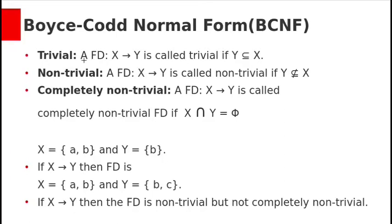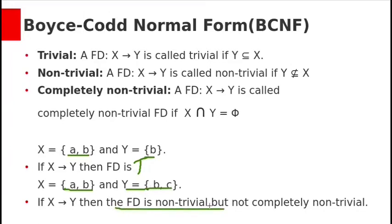What is a trivial functional dependency? A functional dependency x derives y is called a trivial functional dependency if y is a subset of x. A functional dependency x derives y is called non-trivial if y is not a subset of x, and completely non-trivial if x intersection y is empty. For example, if x is {A, B} and y is {B}, then x derives y is a trivial functional dependency. If x is {A, B} and y is {B, C}, then x derives y is non-trivial but not completely non-trivial, since intersection of x and y is {B}.